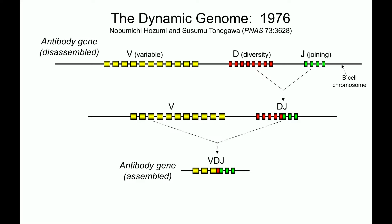Only then do you have a functional antibody gene that can make an antibody protein. And the implications of this were profound. The genome is not static — it's a dynamic entity, it's in essence nature's playground. It can undergo alterations not just slowly over evolutionary time, but dramatic, deliberate changes in individual cells of our body.